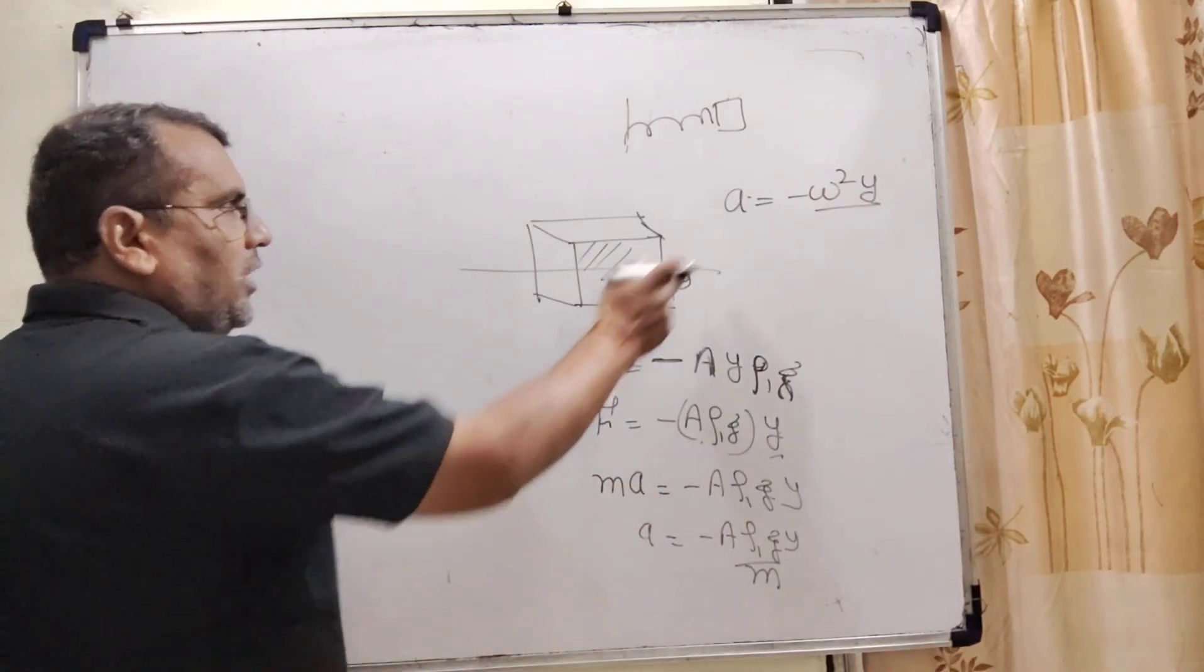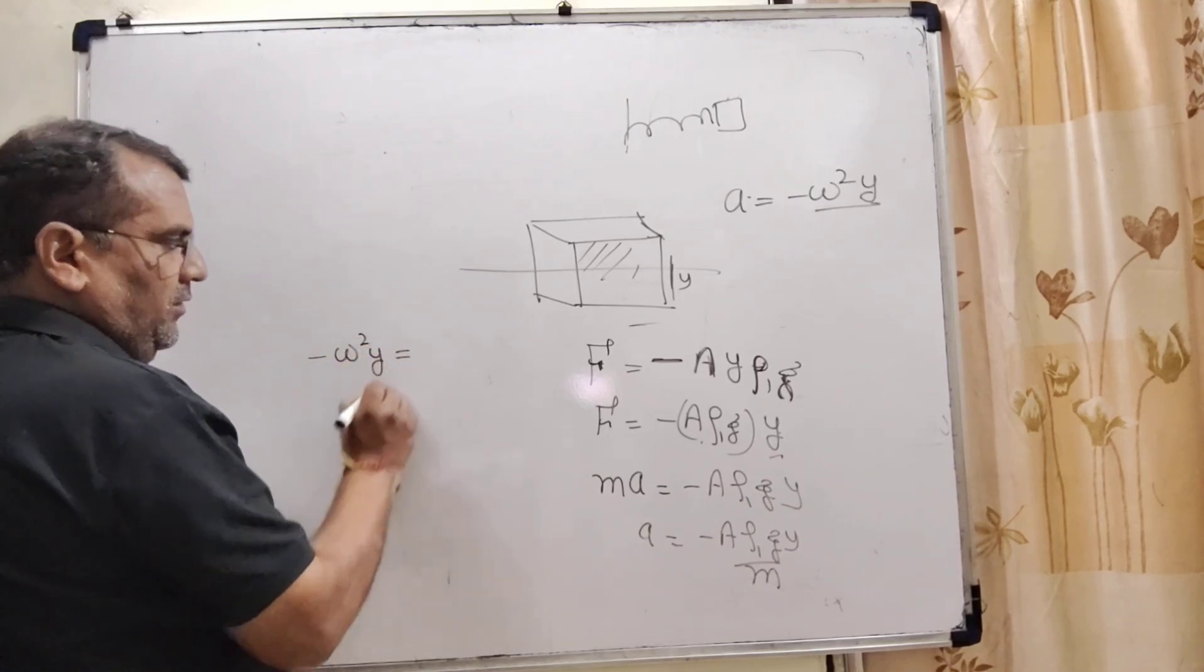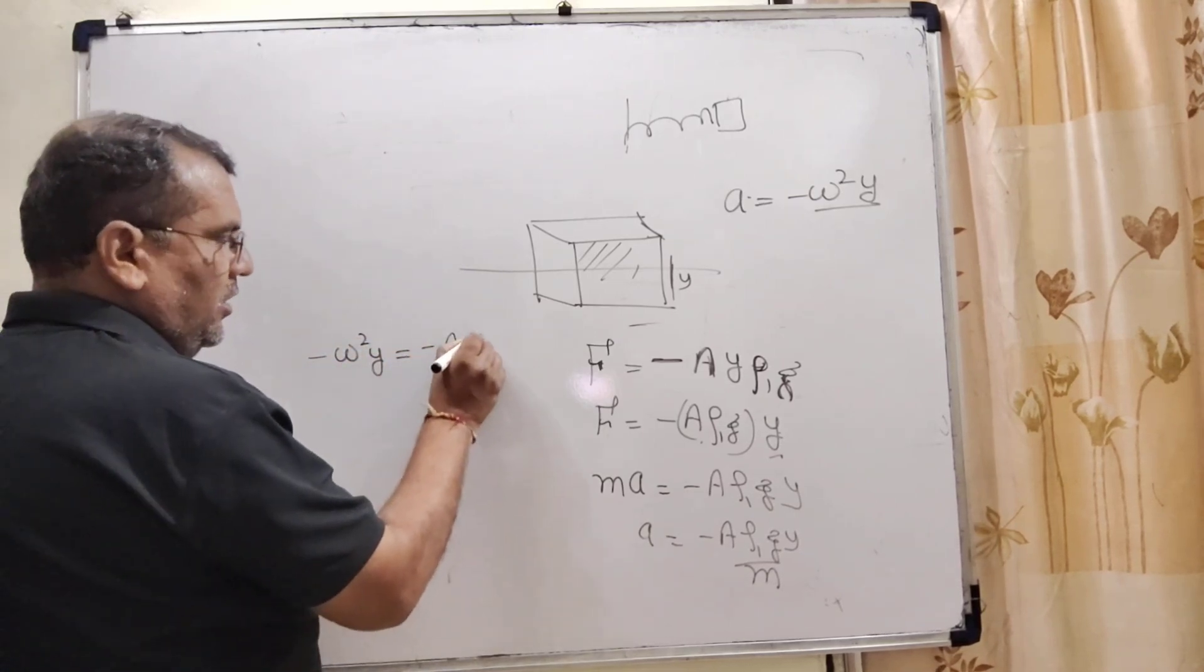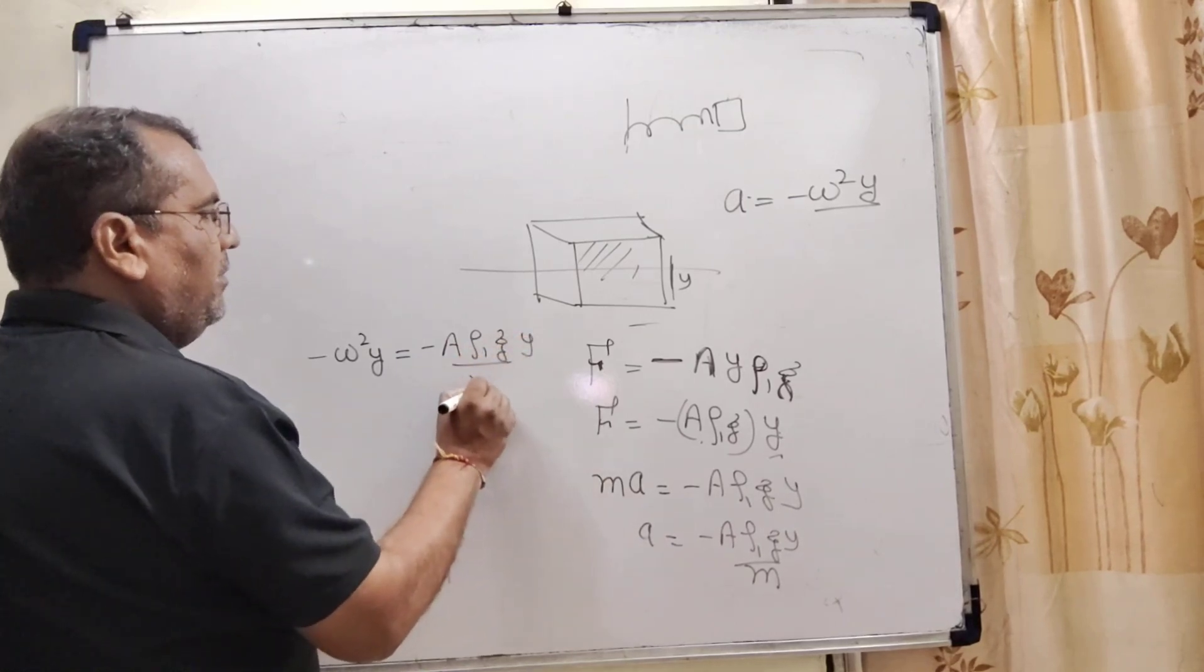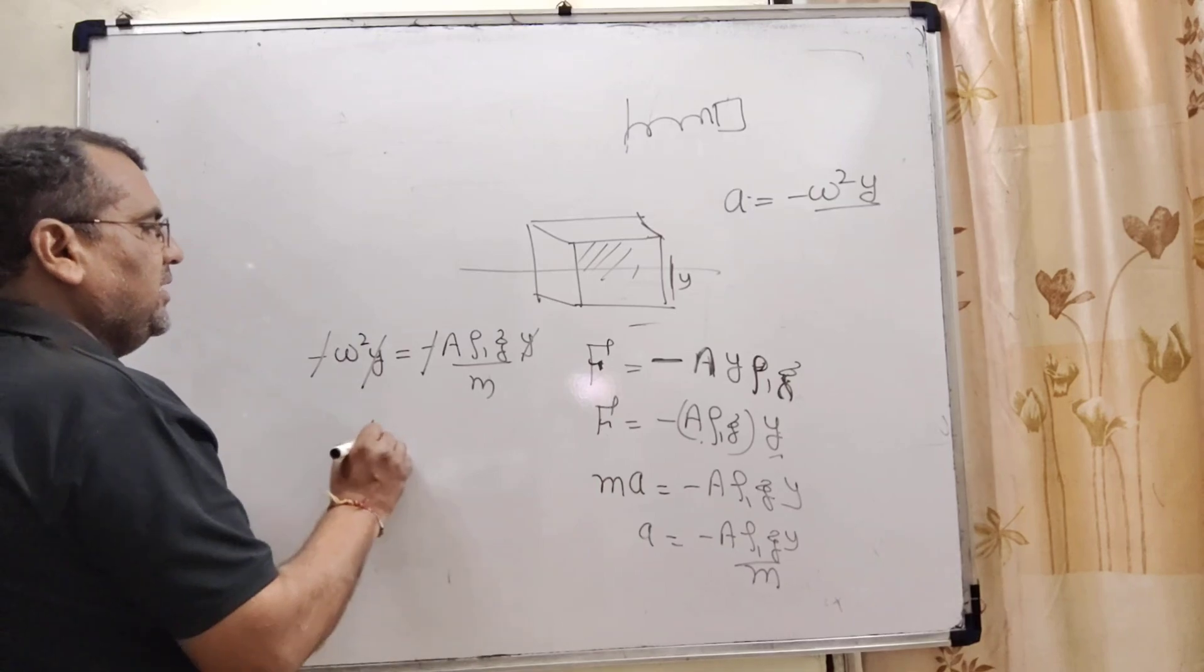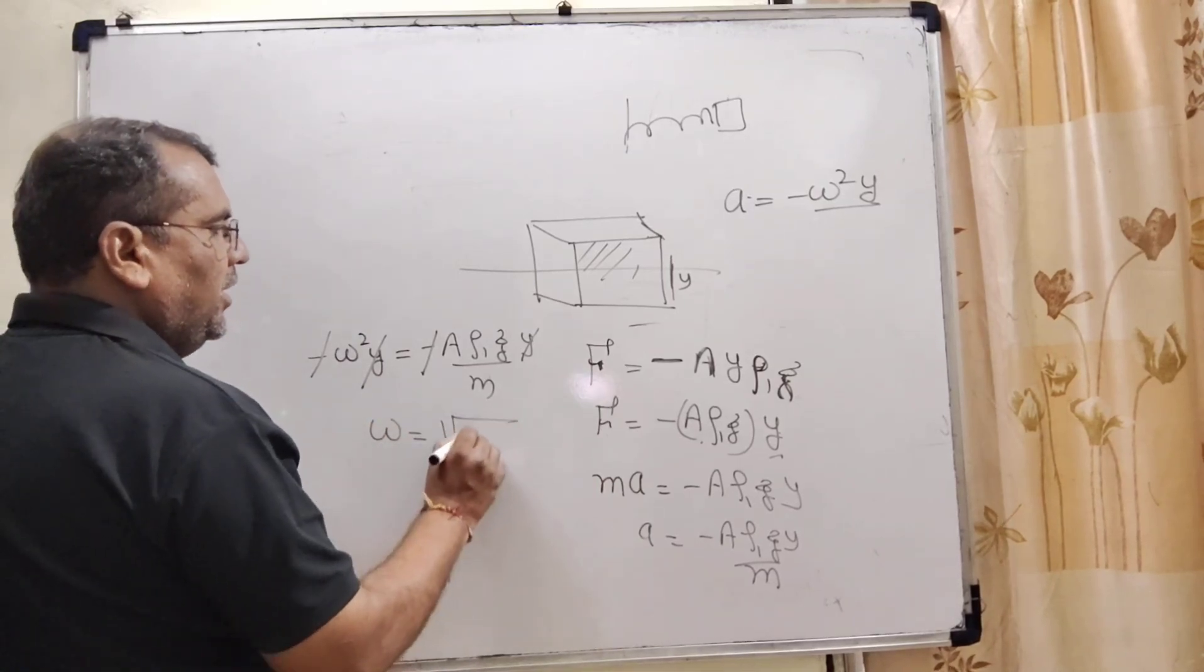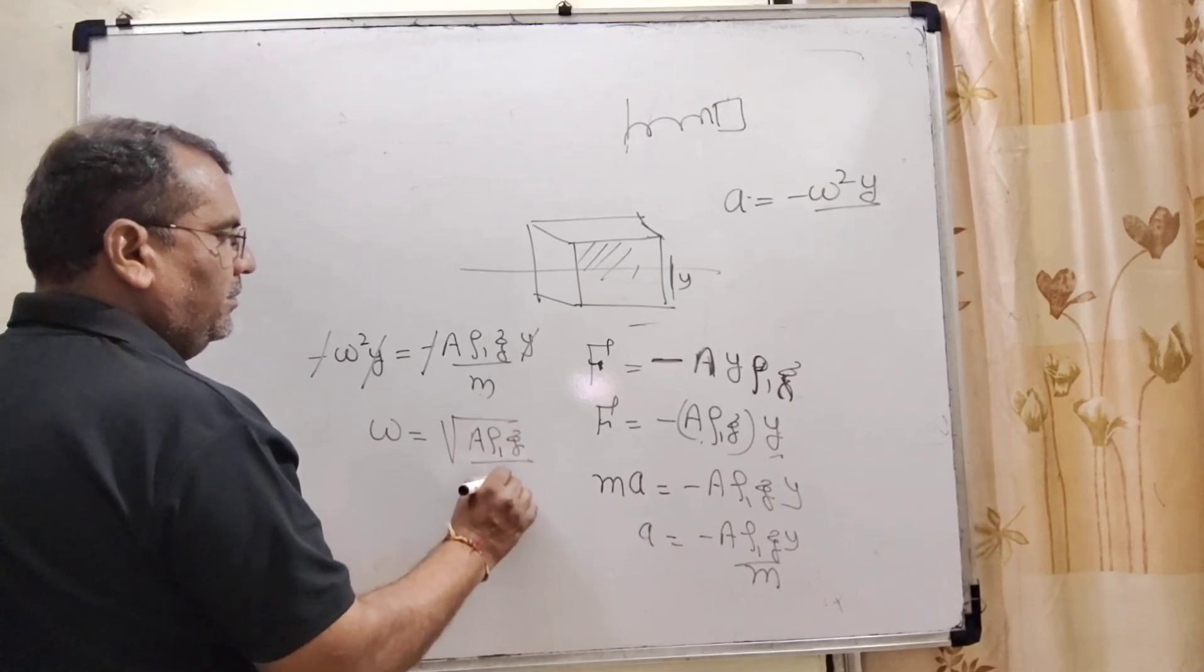Now substituting, ω²y = Aρ₁gy/m. Here, y cancels. The negatives cancel, so ω = √(Aρ₁g/m).